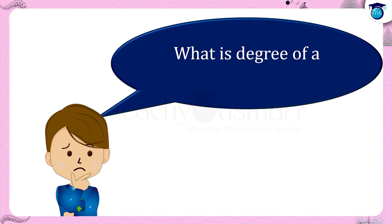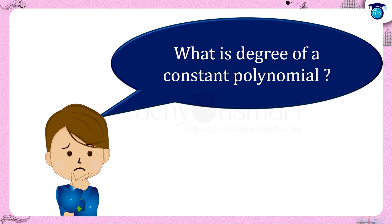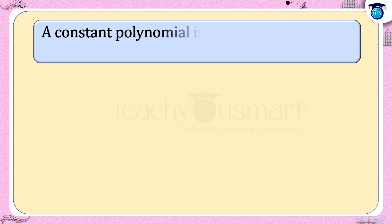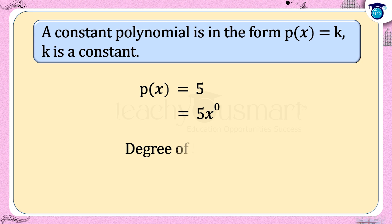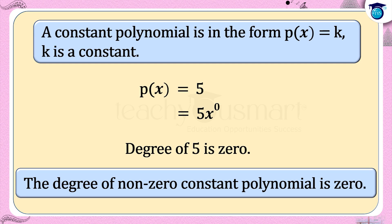Now, what is the degree of a constant polynomial? A constant polynomial is in the form p(x) = k, where k is a constant. For example, p(x) = 5 can be written as p(x) = 5x⁰, therefore the degree of the constant polynomial 5 is 0. In general, the degree of a non-zero constant polynomial is zero.